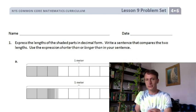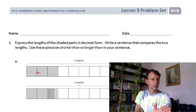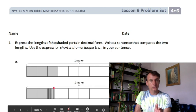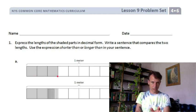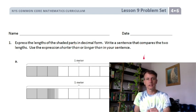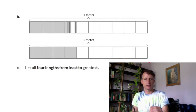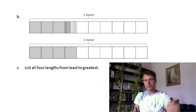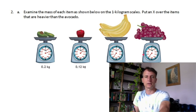Now onto the problem set. We have tape diagrams comparing decimals in meters — tenths and hundredths. Three tenths compared to twenty-seven hundredths: you can see the top one is more. You'll write a sentence saying which is longer or shorter. Then part C asks you to list all four lengths from least to greatest, preparing you for more comparison questions.